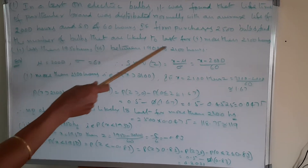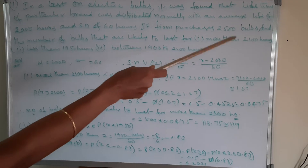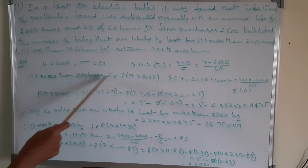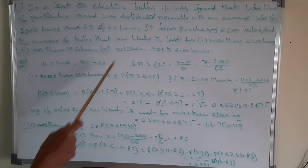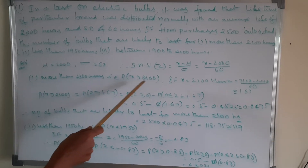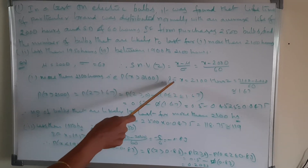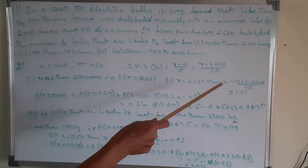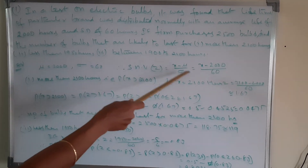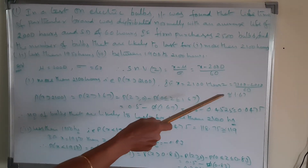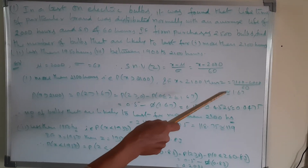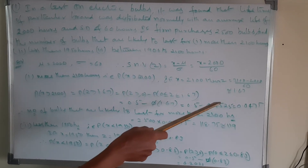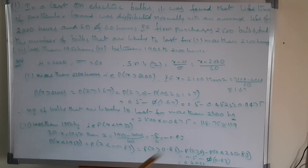First part: more than 2100 hours, that means P(x greater than 2100). If x equals 2100, then z is equal to (2100 minus 2000) divided by 60, which is approximately equal to 1.67.